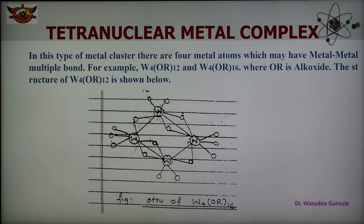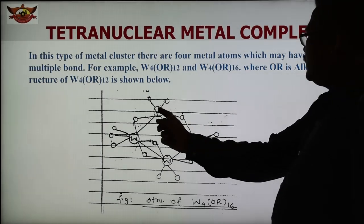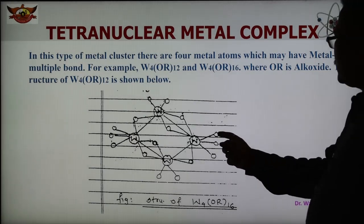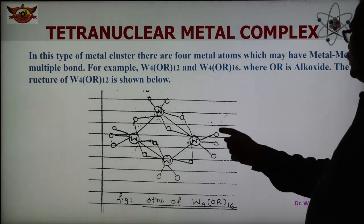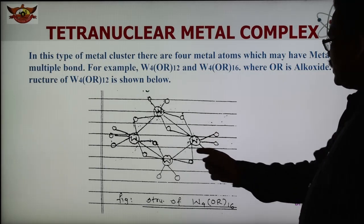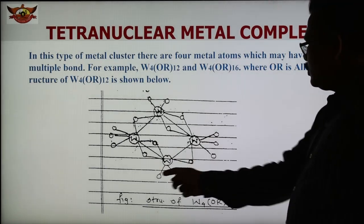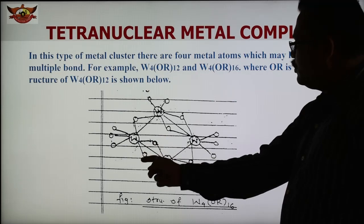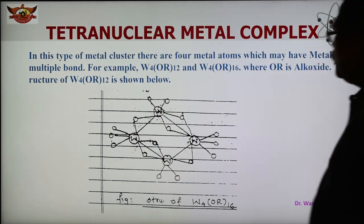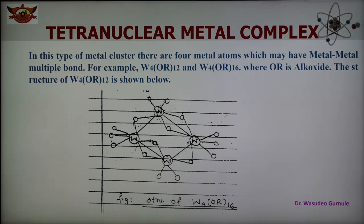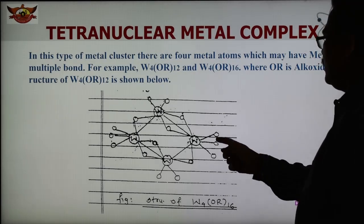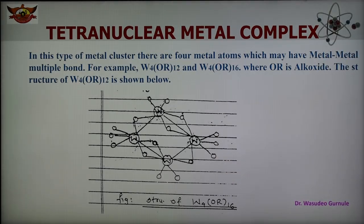The structure of W4OR12 is shown here. There are 4 tungsten atoms — 1, 2, 3, and 4. Each tungsten has 3 alkoxide ligands, and there are also bridging alkoxides. Total: 4 tungsten atoms and 12 alkoxide ligands make up this tetranuclear metal complex. The O here represents the alkoxide or OR group.